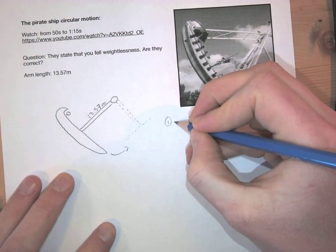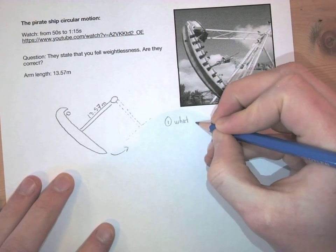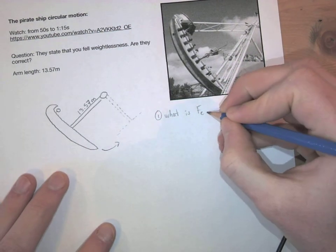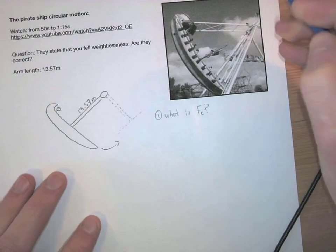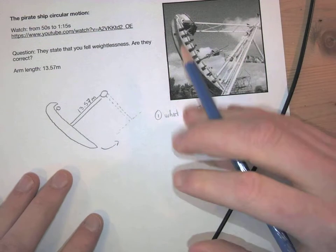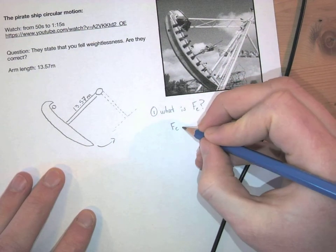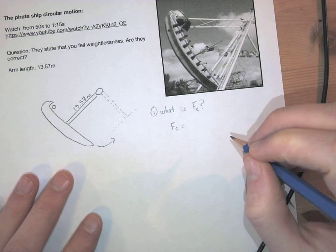So I'm going to ask myself a question: what is the centripetal force that people feel on this ride? It's a vertical circle essentially, so I know FC is going to be either one of two equations.